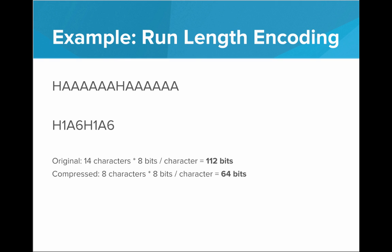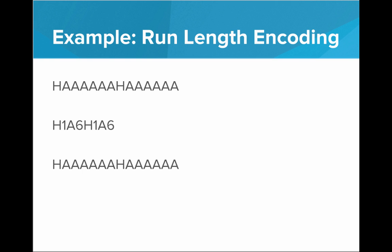We see in the original, we have 14 characters, and since we have 8 bits per character, that's 112 bits. In the compressed version, we only have 8 characters. With 8 bits per character, that's 64 bits. Now when we go to decompress, we need a decompression algorithm that reverses the process. So what we'll do is we will loop over the compressed version, and we will write out that given character that given number of times. So first off, I see an H1, so to decompress we'll write an H, followed by an A6, so we'll write out six A's, followed by another H1, that's a single H, followed by another A6, so we'll write out six more A's. And we see that the decompressed version is exactly the same as the original. So this was a lossless compression algorithm.